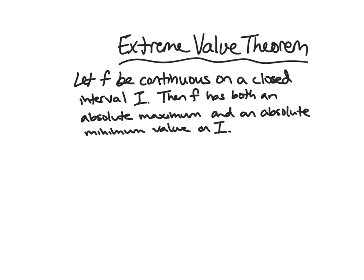So here's the statement. Let f be continuous function on a closed interval i. If it satisfies those two conditions, which are the same as the IVT conditions, continuous on a closed interval, then f has both an absolute maximum and an absolute minimum value on that interval.